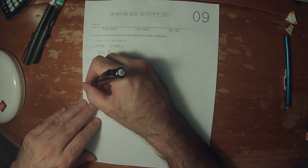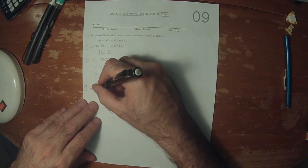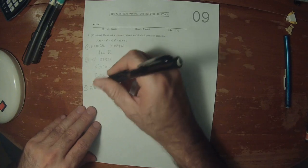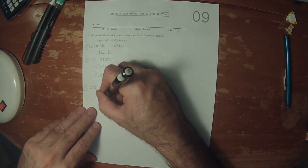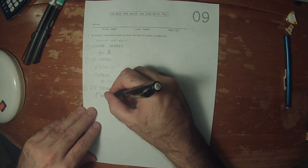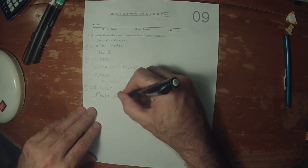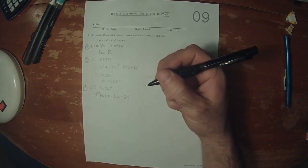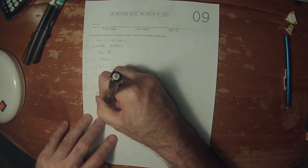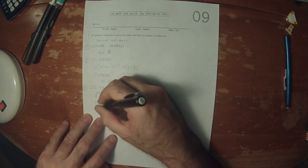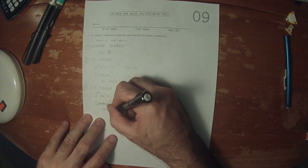Now, we need to find the second derivative. The second derivative is negative 6x minus 24. Because we computed a derivative, we need to check, was there a change in the domain? Again, the second derivative is a polynomial, so there was no change.